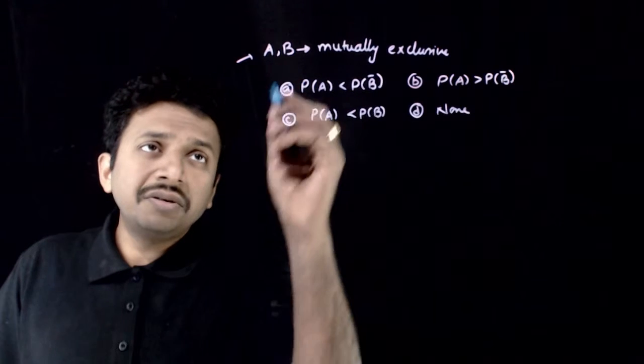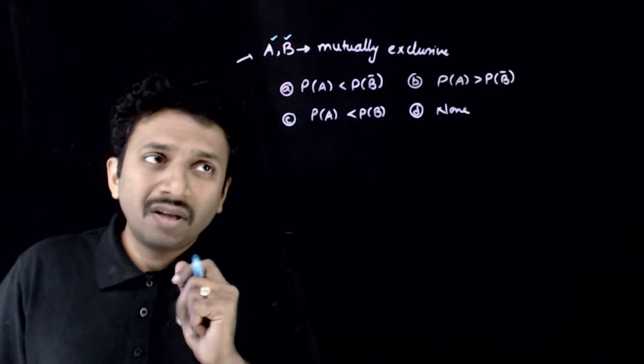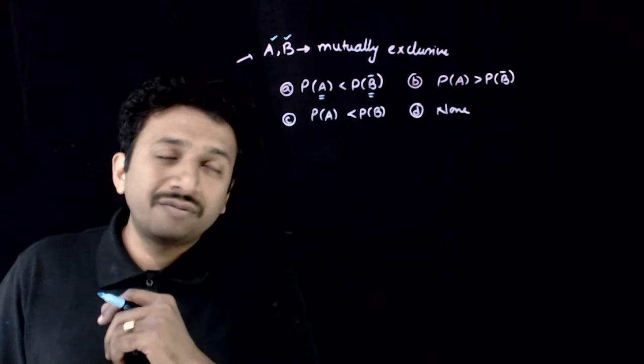Welcome students. In this question, you are given that A and B are two events which are mutually exclusive, and you are asked to compare the probability of A with the probability of complement of B.